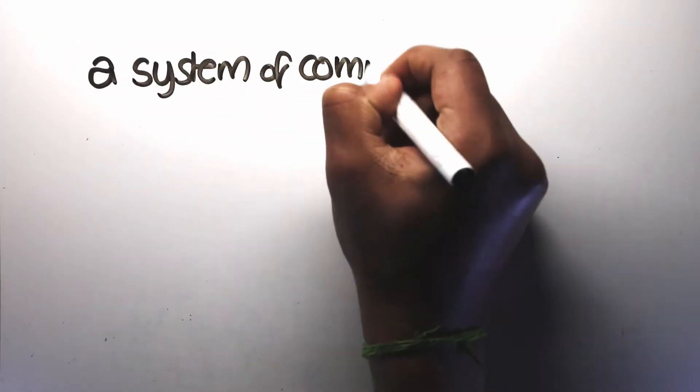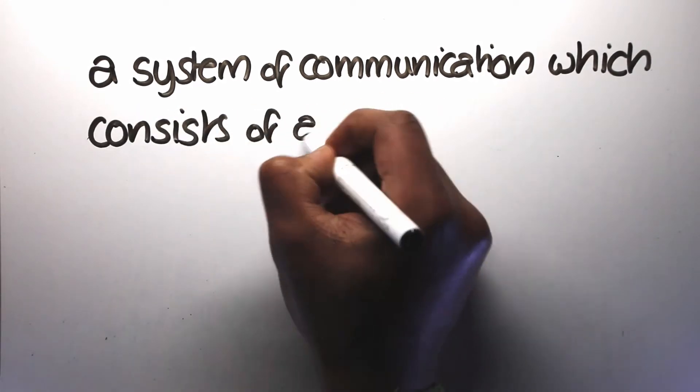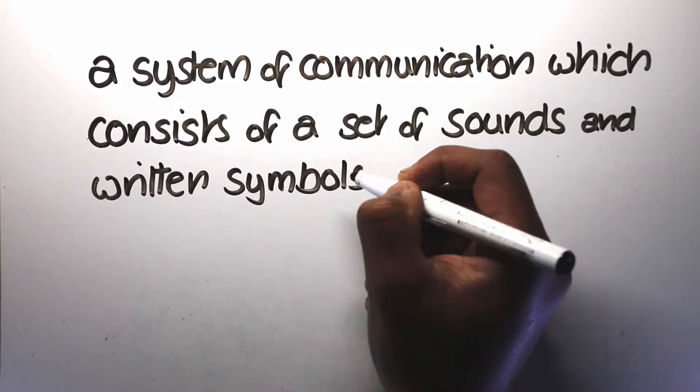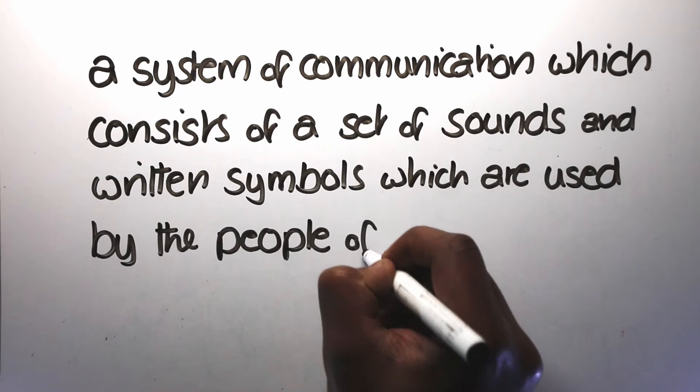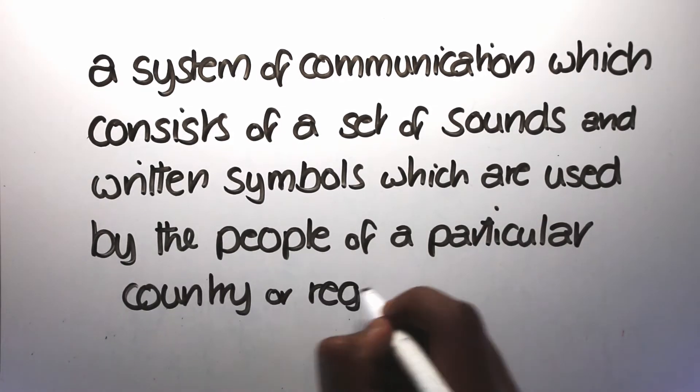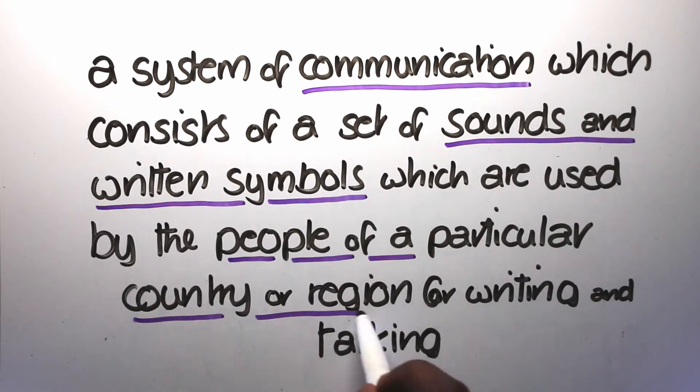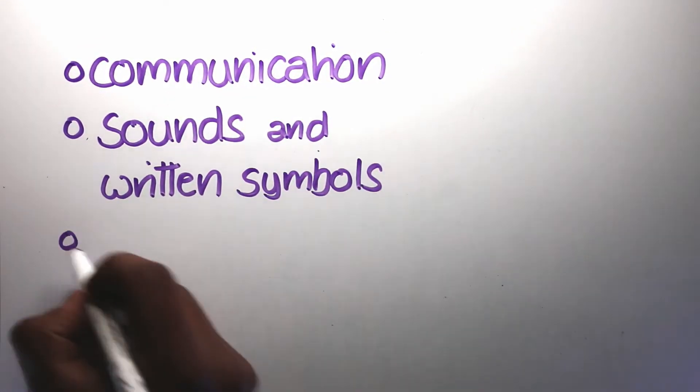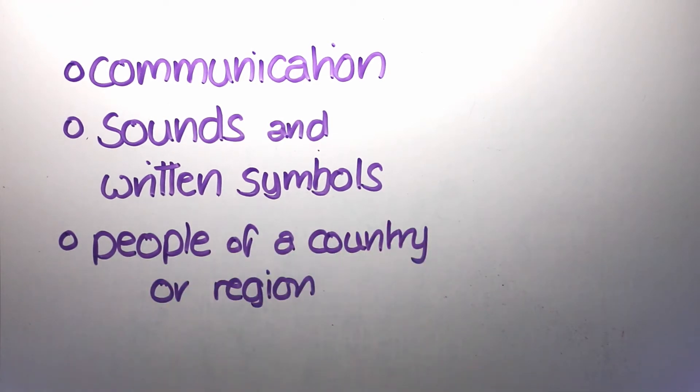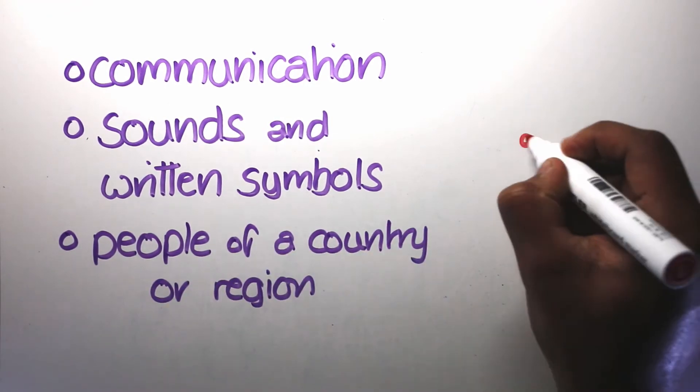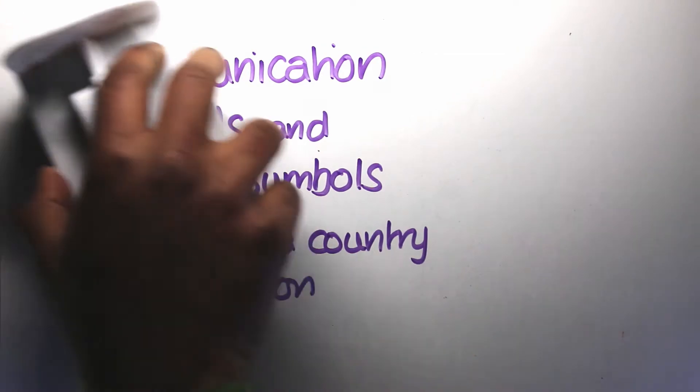The Collins Dictionary defines a language as a system of communication which consists of a set of sounds and written symbols, which are used by the people of a particular country or region for writing and talking. There are three important things here: communication, sounds and written symbols, and people from a country or region. It turns out that there are problems with every one of these points.